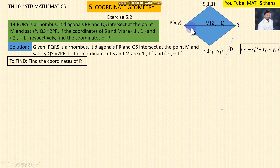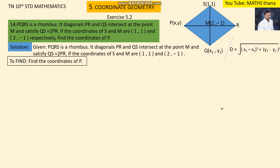The diagonals PR and QS bisect each other. The important property of a rhombus is that the diagonals bisect each other perpendicularly. Using this concept, the midpoint of QS is M.